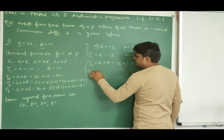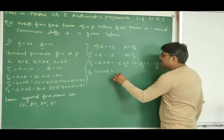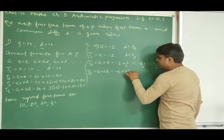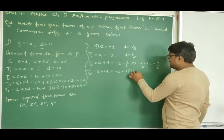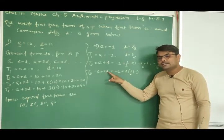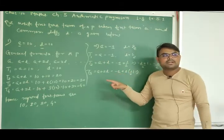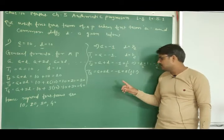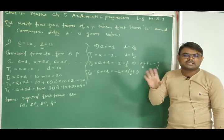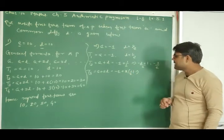For the third term, T3 = A + 2D. A = -1 and 2D = 2 × (1/2). Since 2 in the numerator and 2 in the denominator cancel each other, 2D simplifies to 1. So T3 = -1 + 1 = 0.